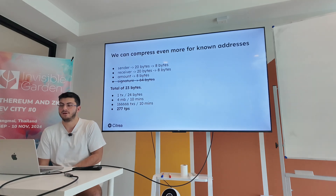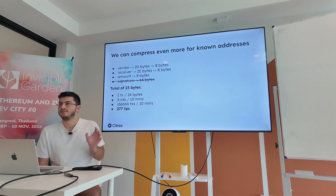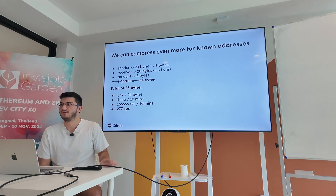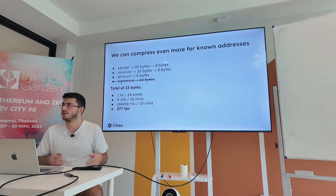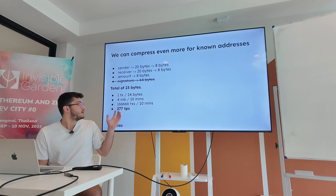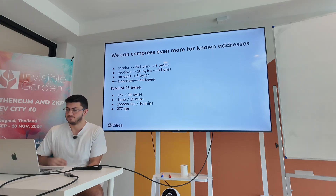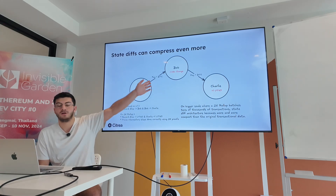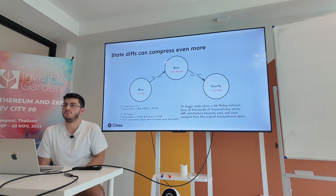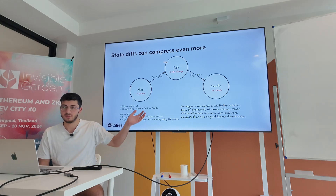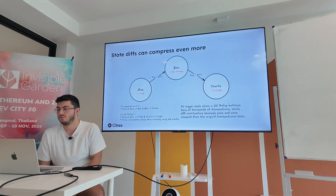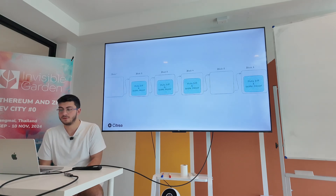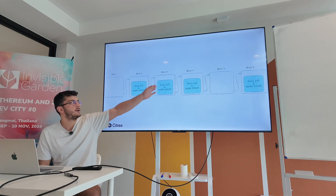We can compress even more. If we've seen a sender from old transactions, we can map it to an ID and use eight bytes for that, getting rid of the full 20 bytes, reaching about 270 transactions per second. We can compress further: if Alice sends Bob some funds and Bob sends funds to Charlie, we don't need to show the balance change of Bob because it hasn't changed. So we can get rid of all the state diffs about Bob as well. Our rollup would then have a state diff and a SNARK proof.